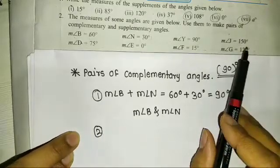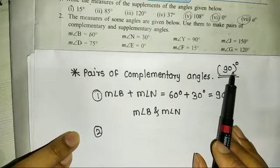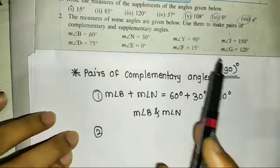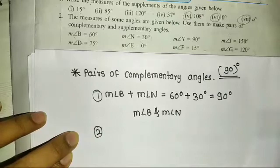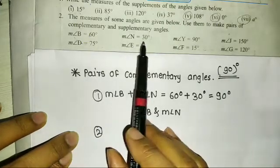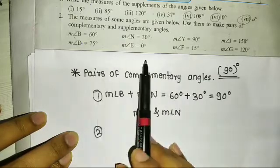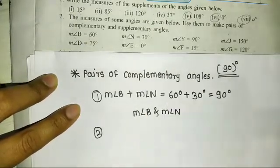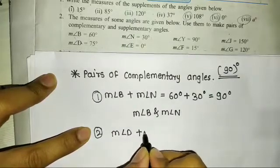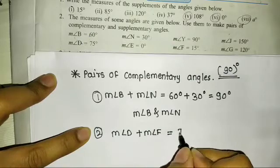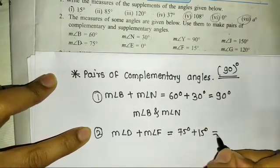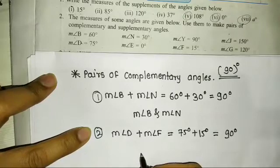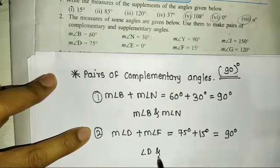What is the second pair? We will find out two angles that add up to 90 degrees. Angle D is 75 degrees plus angle F is 15 degrees — their addition is 90 degrees. So, complementary angle pair: angle D and angle F.